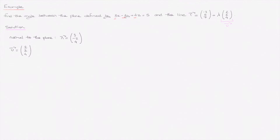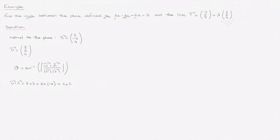We can now state that theta equals arcsin of the absolute value of u dot n over the product of their respective magnitudes. Let's calculate u dot n: that's 2 times 3 plus 2 times negative 2 plus 4 times 4, which gives us 6 minus 4 plus 16, so u dot n equals 18.